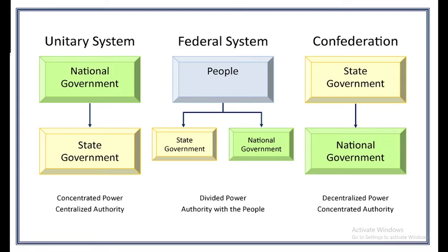In a confederation, however, powers are derived from the states or the constituent units and delegated to the national government. Here, the states or constituent units do not surrender their sovereign power. Instead, they delegate some of the common powers so that the national government or centralized authority can exercise those powers for the good of the whole community. One example of a confederation is the European Union. Recently, Britain left the European Union because when joining the Union, Britain did not surrender its sovereign authority. So they can be members of the Union and at the same time leave the Union anytime they want.